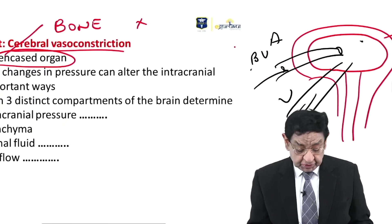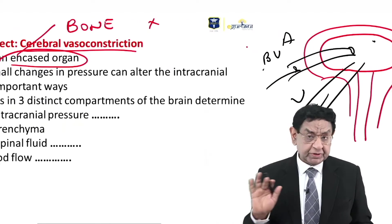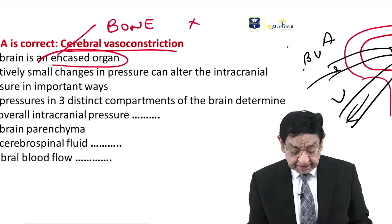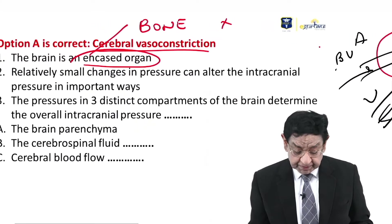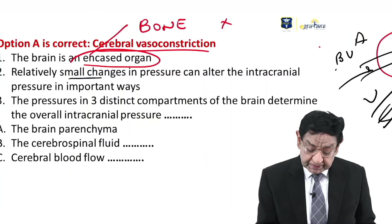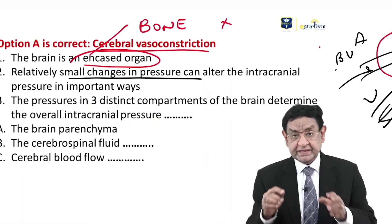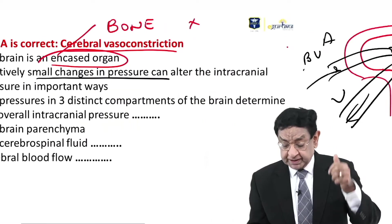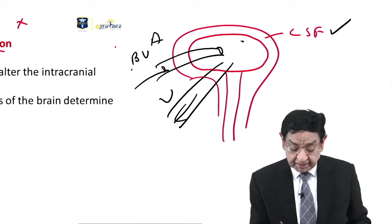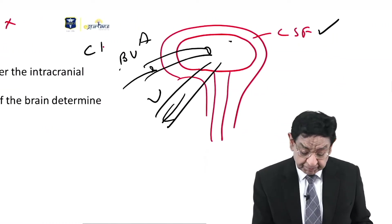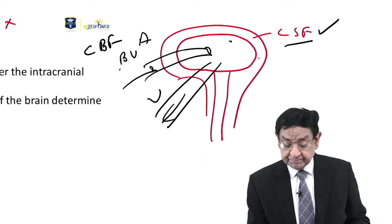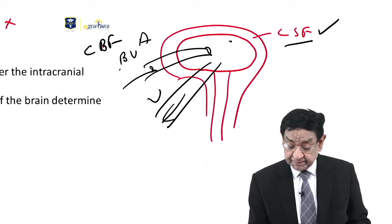So this skull contains CSF, brain parenchyma, and blood going via artery and coming back via vein — totally encased. So these are the three things which are going to determine the pressure. Even the slightest change in pressure in any one of the three components — cerebral blood flow, CSF, and brain parenchyma — will affect ICP.